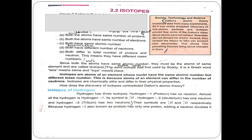In a side note: Dalton's atomic theory explained data for many experiments and was widely accepted. However, the discovery of subatomic particles and isotopes proved that some of Dalton's ideas about atoms were not correct. Scientists did not discard his theory; instead, they revised the theory to take into account new discoveries. This shows how prevailing theories bring about changes.